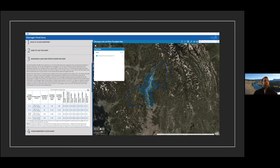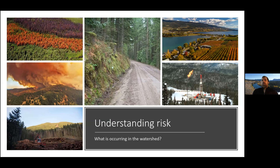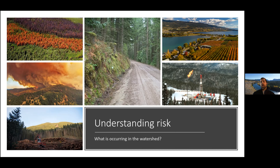In our lab, two things we're often interested in understanding when looking at watersheds — especially for source water protection — are: first, understanding risk: what is occurring in the watershed? We have many watersheds that are multi-stakeholder with lots of different land uses — forestry, oil and gas, agriculture, road development — and also natural disturbances like forest fire, mountain pine beetle, and drought. How do we understand all of that? Then second, related to understanding risk: what is at risk within the watershed itself?